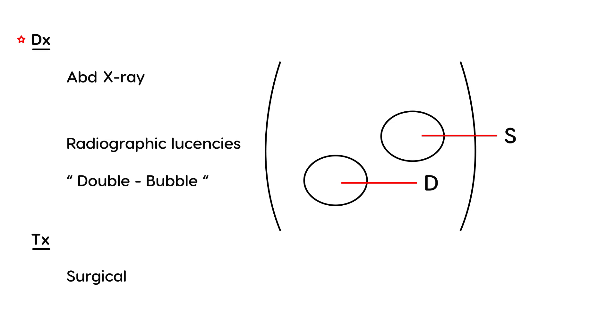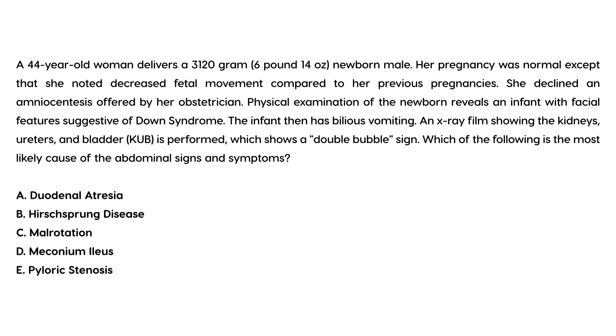Let's look at a couple vignettes. A 44-year-old woman develops a 3,120 gram newborn male. Her pregnancy was normal except that she noted decreased fetal movement compared to her previous pregnancies. She declined an amniocentesis offered by her obstetrician. Physical exam of the newborn reveals an infant with facial features suggestive of Down syndrome. The infant then has bilious vomiting. An x-ray film showing the kidneys, ureters, and bladder is performed, which shows a double bubble sign. Which of the following is most likely the cause of the abdominal signs and symptoms? Well, this is a classic clinical vignette that has all the telltale signs of duodenal atresia, so the answer is choice A.